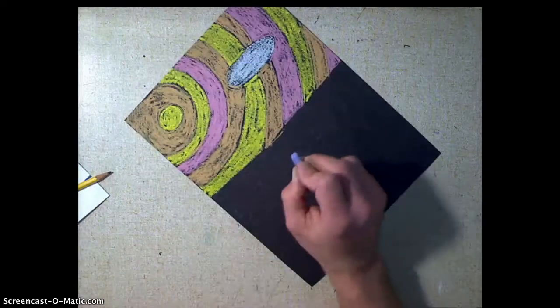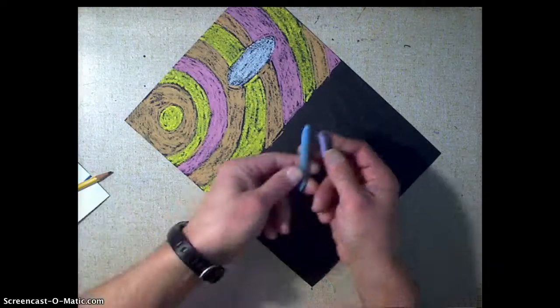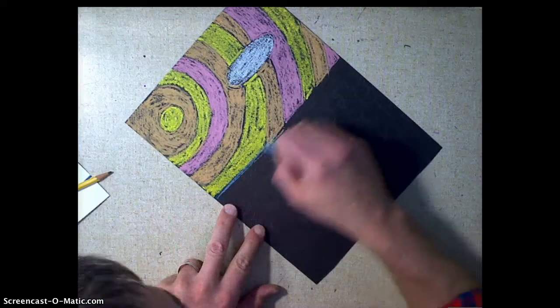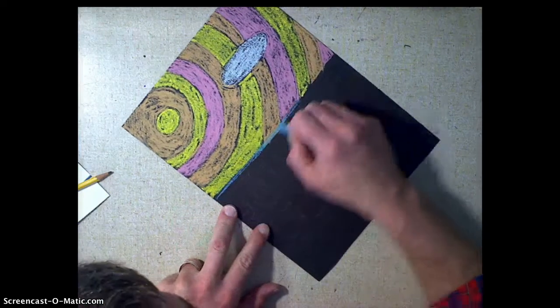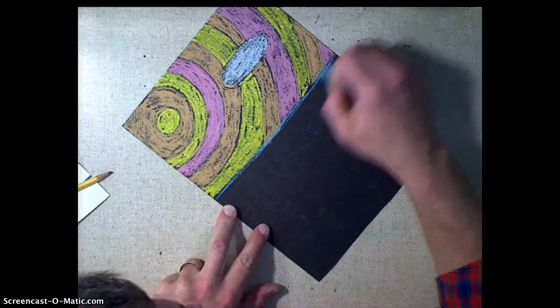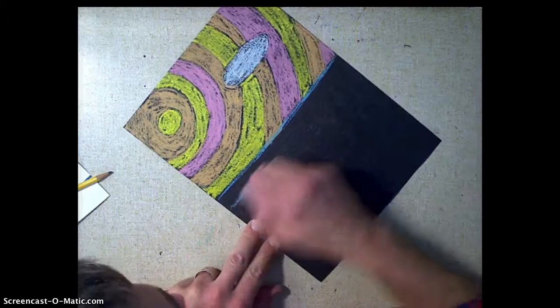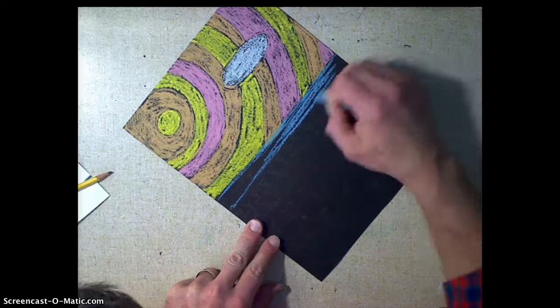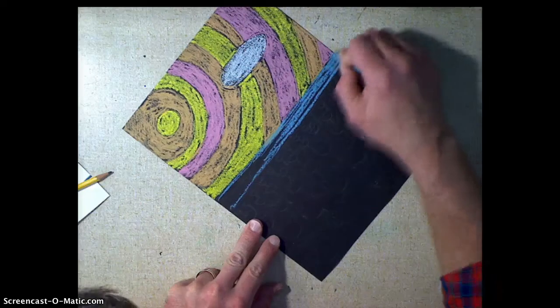When I do my water, I'm going to grab a couple different blues. And I'm going to add, first thing I'm going to do is outline. Because I started to run my sun into my water. So I'm going to kind of just do this first with lines going across. See, I'm working horizontally now and not vertically.